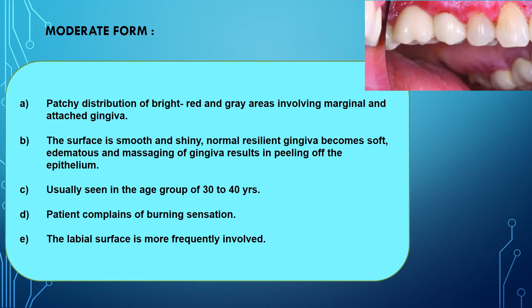In the moderate form, it appears as a patchy distribution of bright red and gray areas involving marginal and attached gingiva. The surface will be smooth and shiny; normal resilient gingiva becomes soft and edematous, and massaging of the gingiva will result in peeling of the epithelium. It is usually seen in the age group of 30 to 40 years, and patients usually complain of burning sensation.